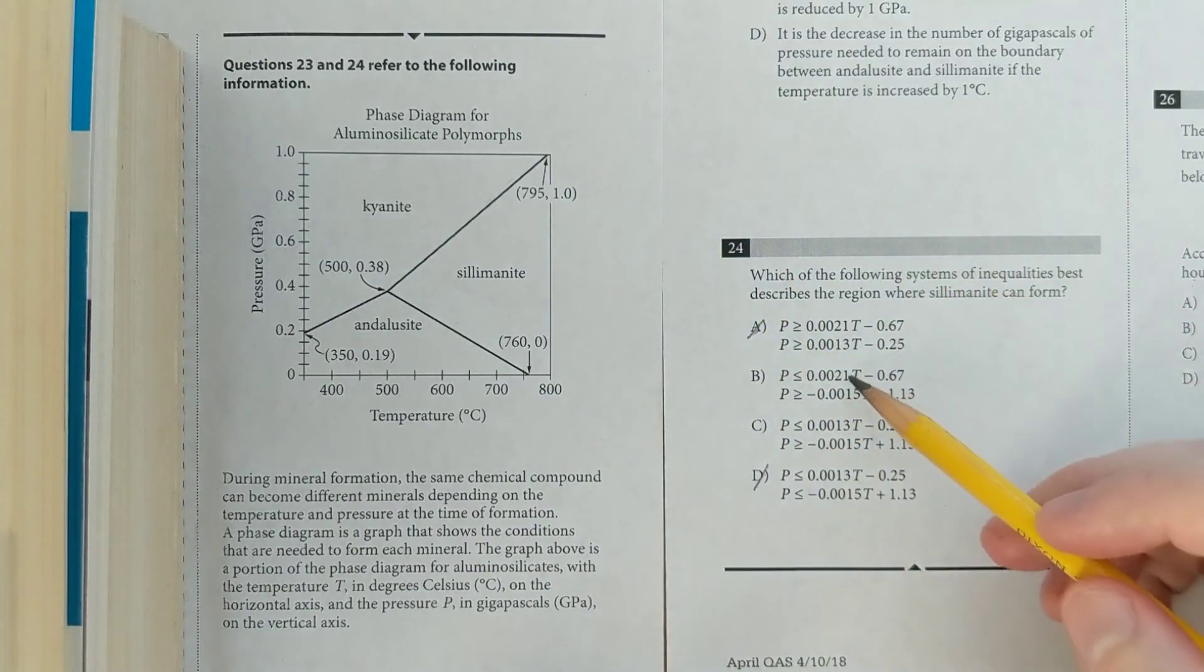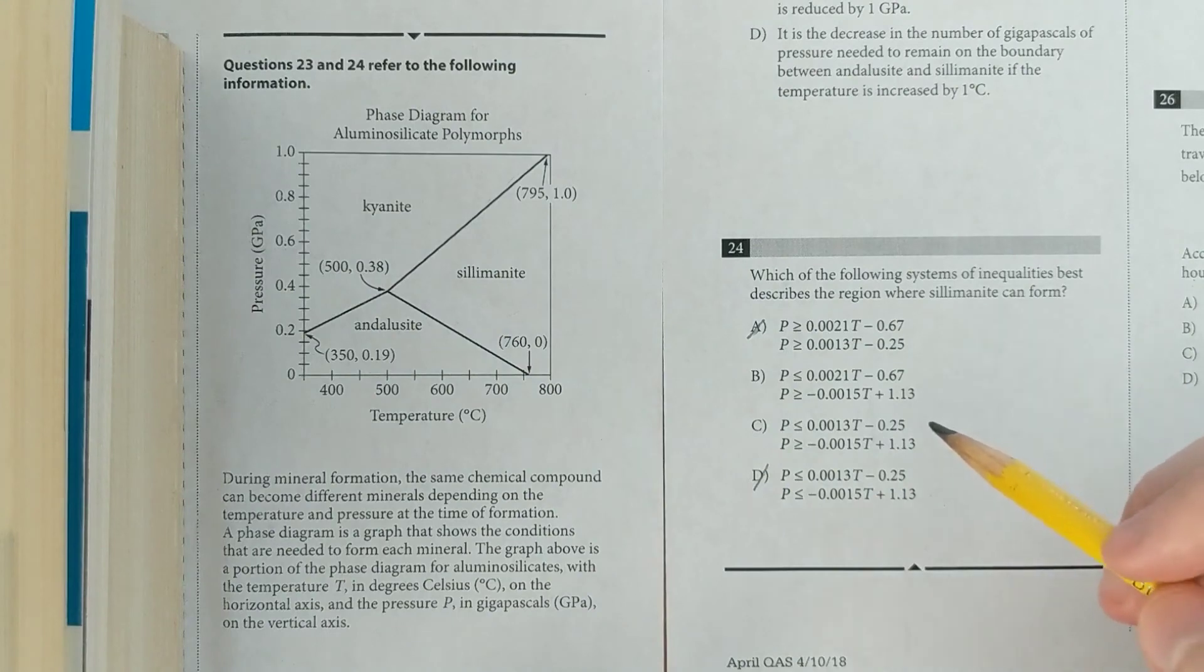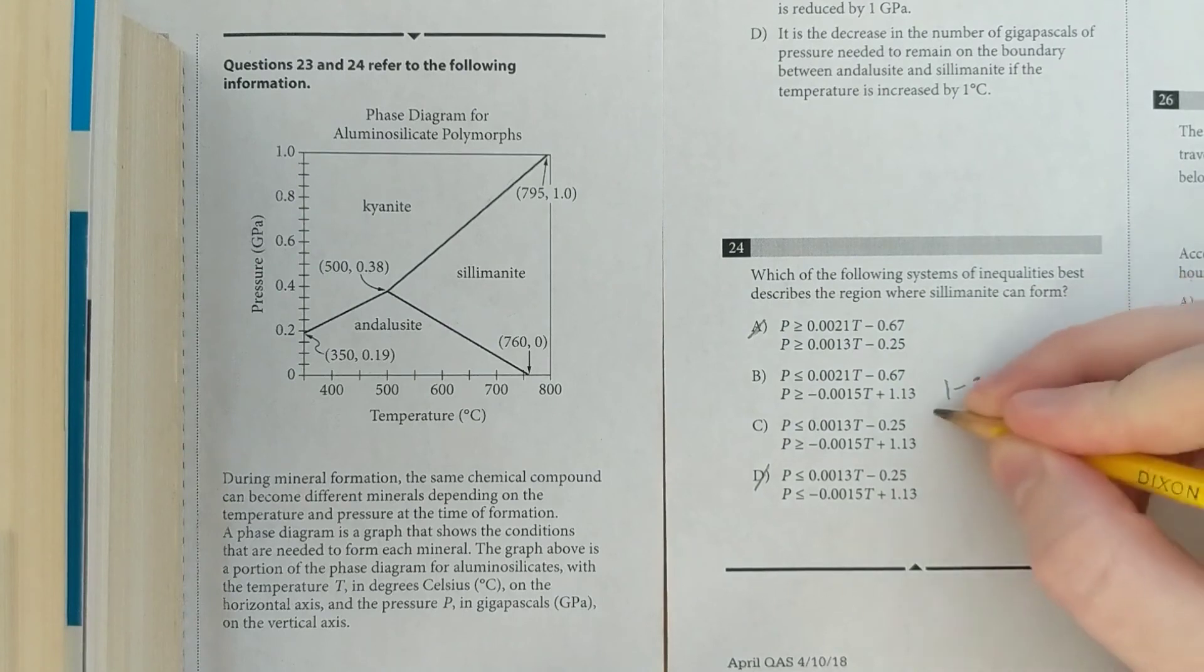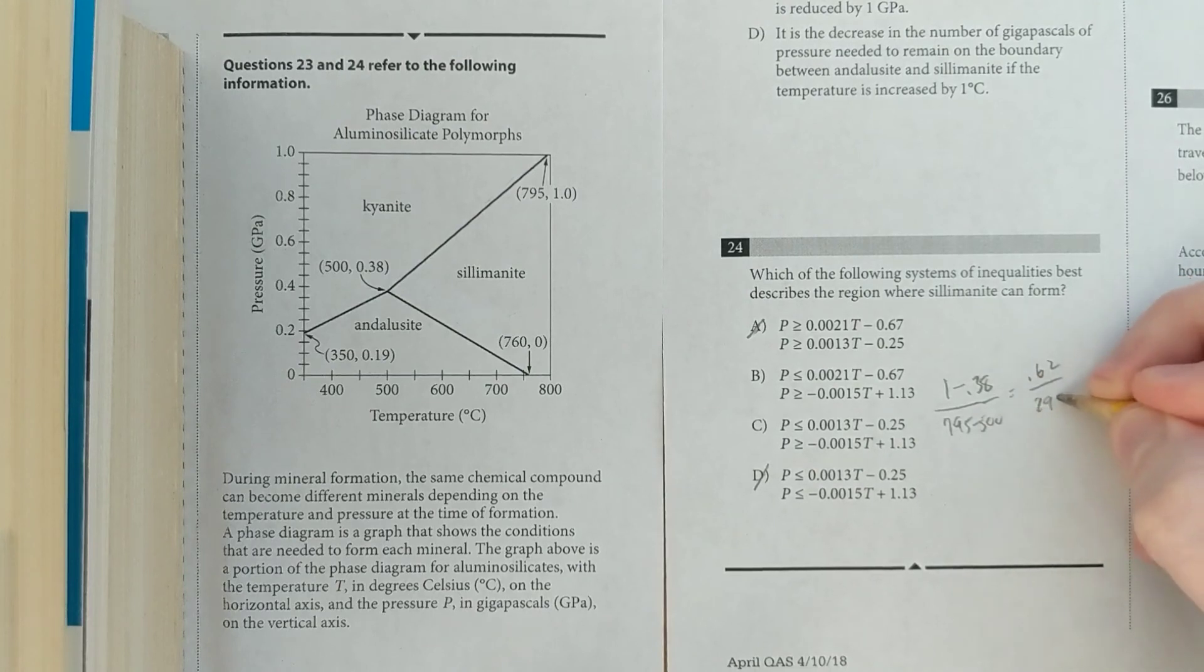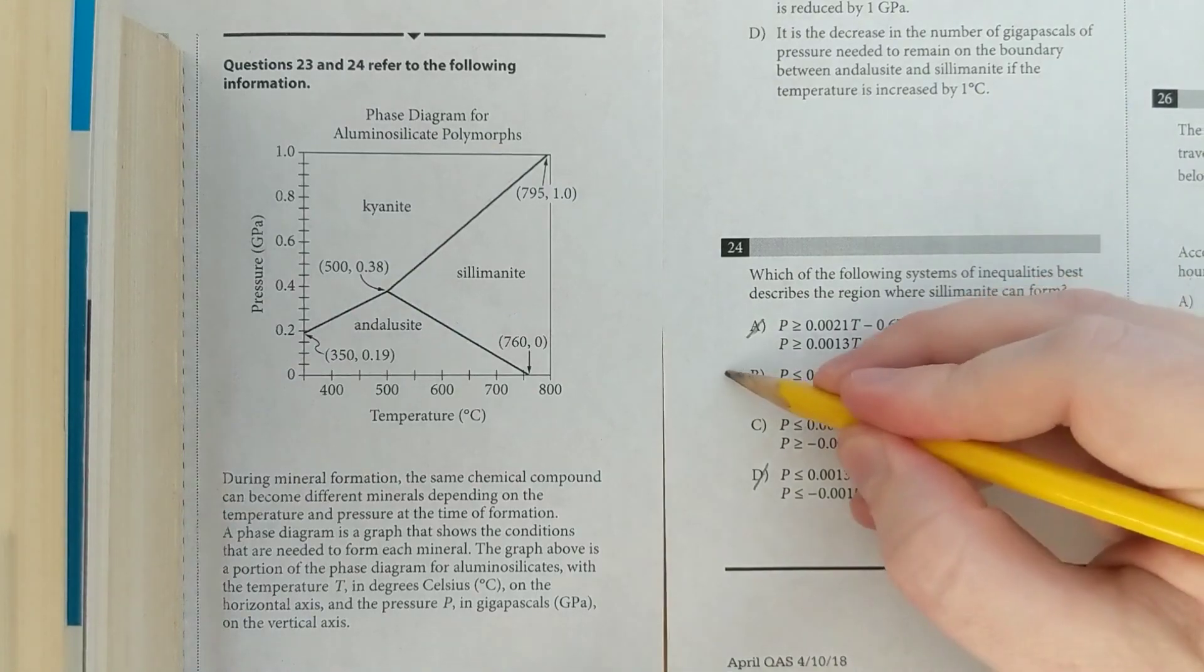And I can see that the slopes are different for those two. So I'm just going to calculate the slope and then hope to get the answer that way. So I'll do Y minus Y, 1 minus 0.38 over X minus X. That gives me 0.62 over 295. And if you use your calculator, you'll get something like 0.0021. That means it's B.